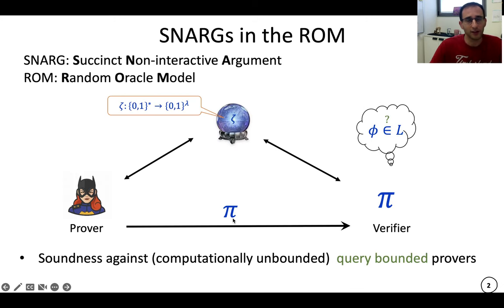So what are SNARGs? They are succinct non-interactive arguments in the random oracle model. This is a prover and a verifier. The prover wants to convince the verifier that some instance is in the language, so he sends a single short message π to convince the verifier. And they both have access to a totally random function.